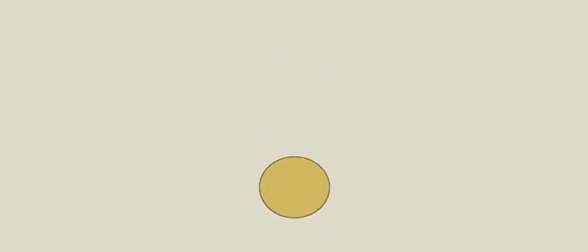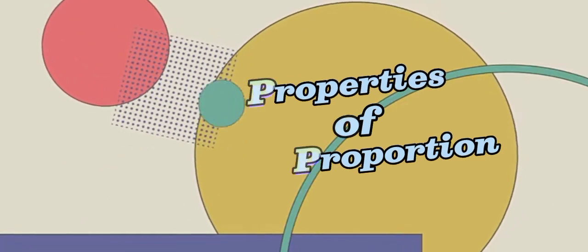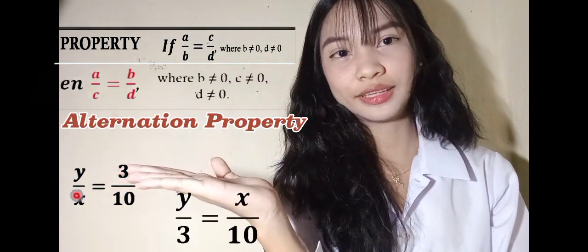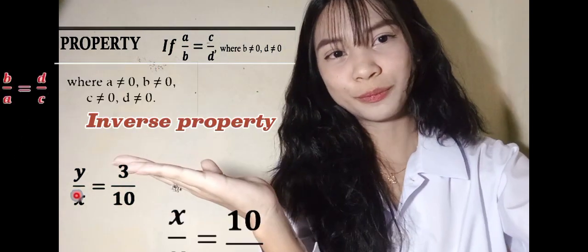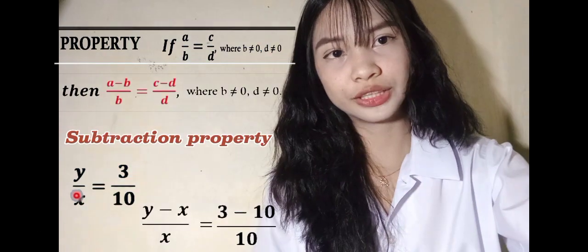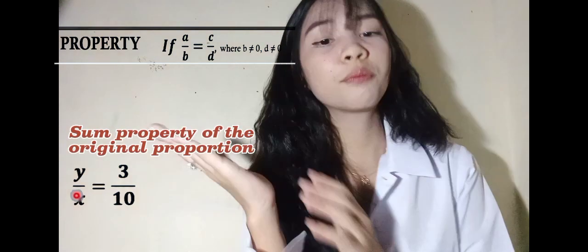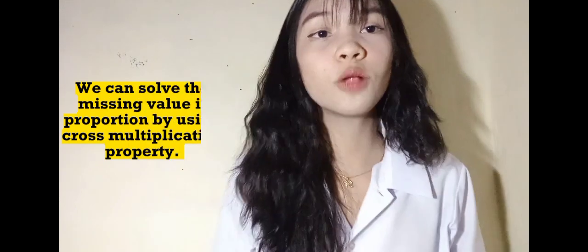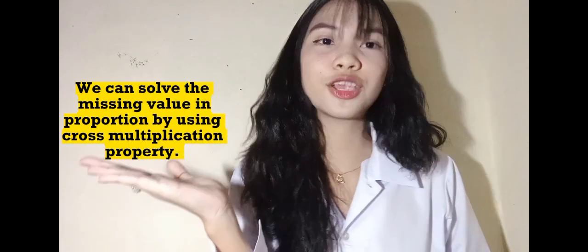Now let's talk about the properties of proportion. We have cross multiplication, alternation property, inverse property, addition property, subtraction property, and the sum property of the original proportion. When there is a missing value, we need to find X. We can solve the missing value in proportion by cross multiplication property.